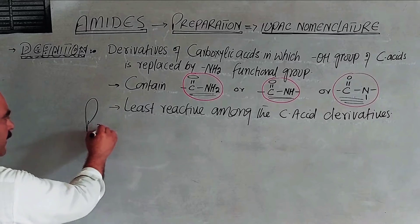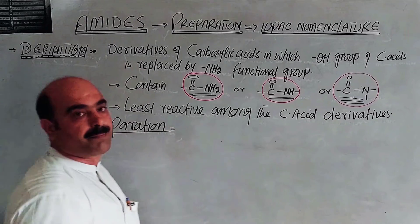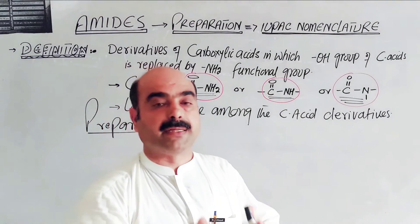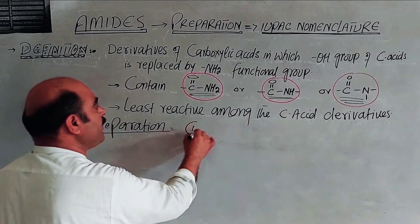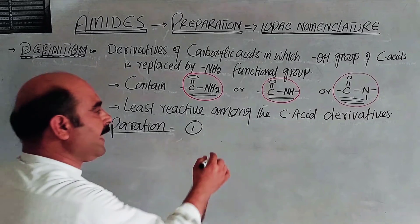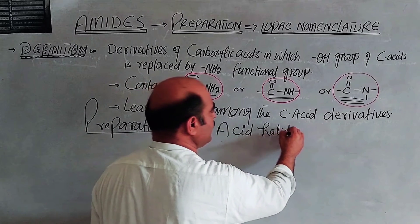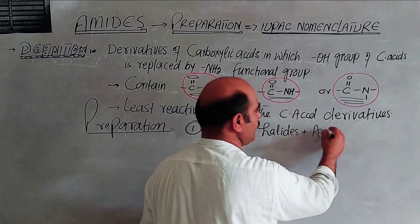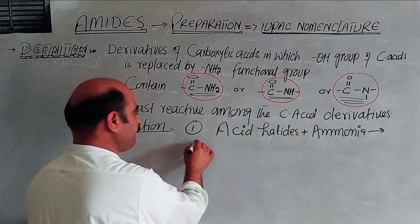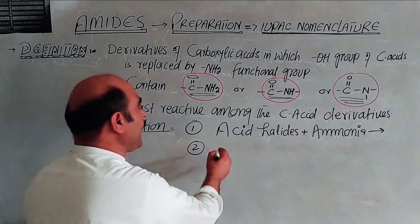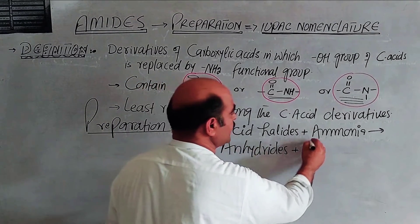Now, how can amides be prepared? There are four methods of preparation of amides. The first method involves acid chlorides, also called acid halides. Acid halides react with ammonia to give amides. One of the reactants must always be ammonia, because ammonia provides the NH2 group which replaces the OH group.